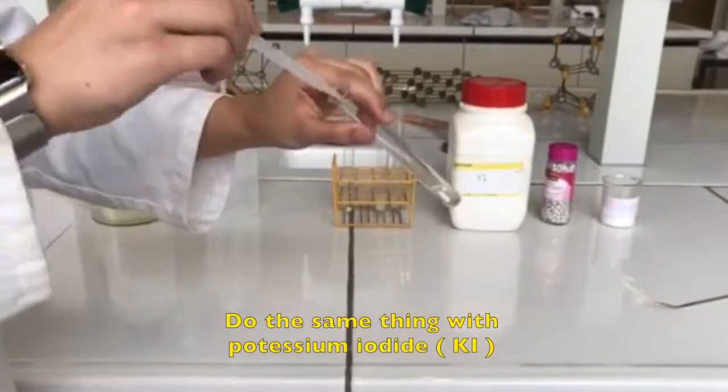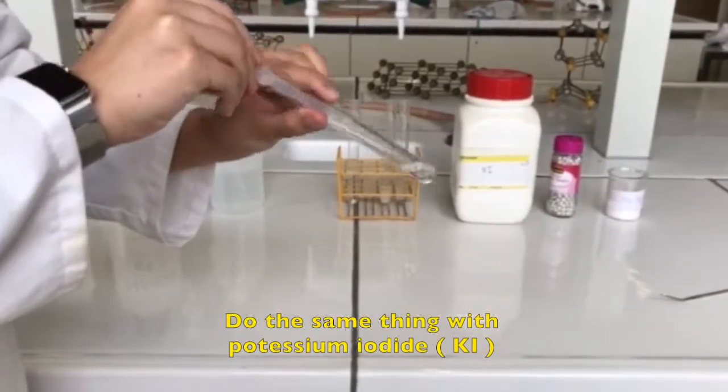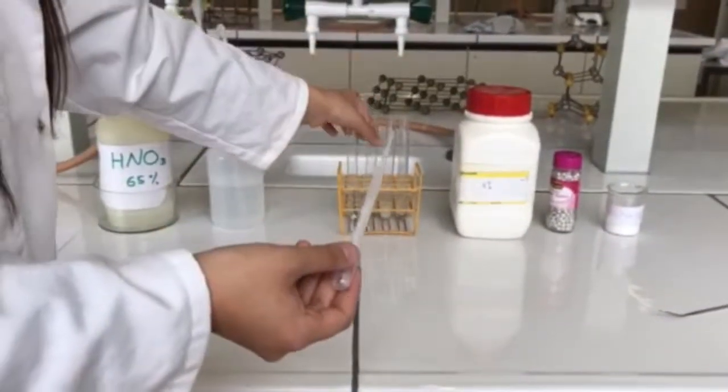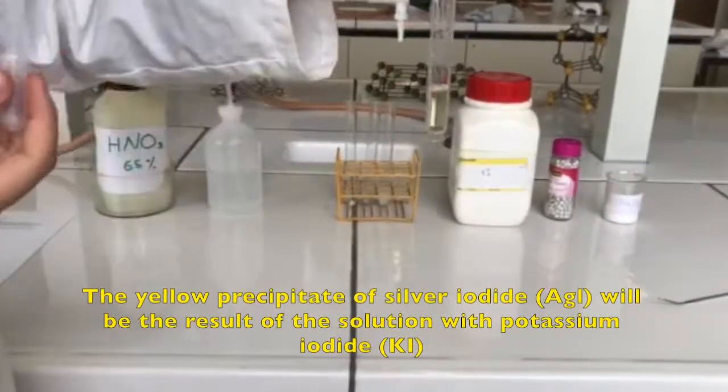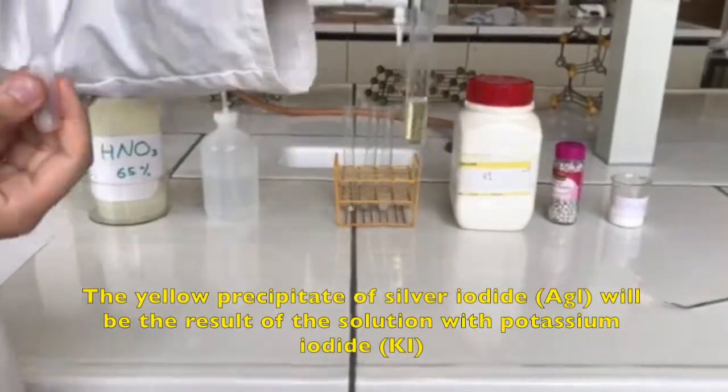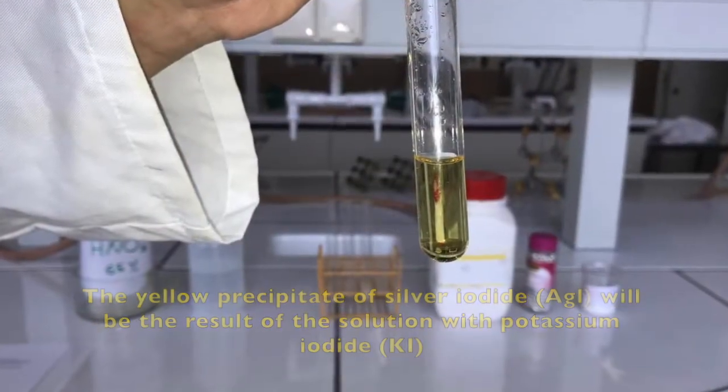Do the same thing with potassium iodide. The yellow precipitate of silver iodide will be the result of the solution with potassium iodide.